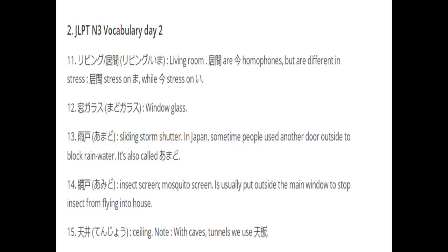There will be two doors in Japanese houses. The sliding strong shutter outside is called amado. And next, tenshu — ten means sky, tenshu means ceiling. We usually use this word with caves and tunnels. So tenshu means ceiling.